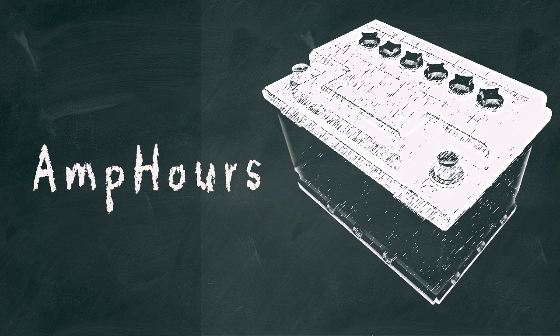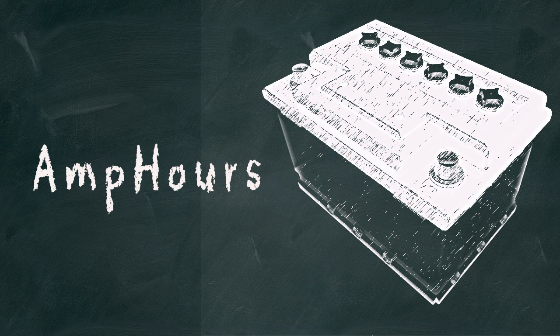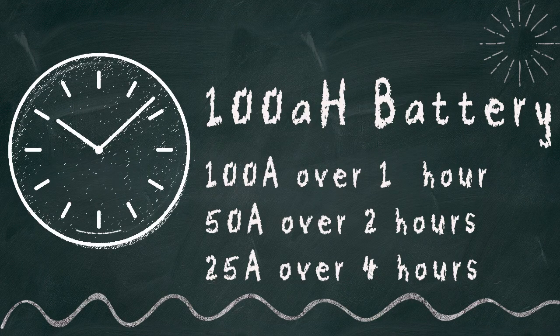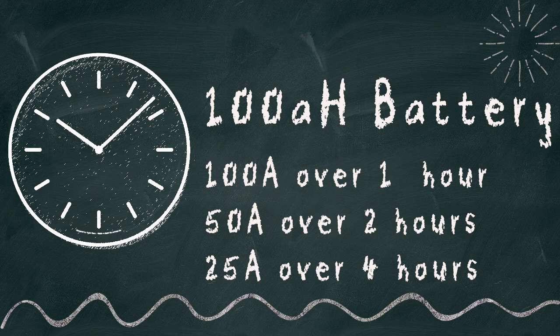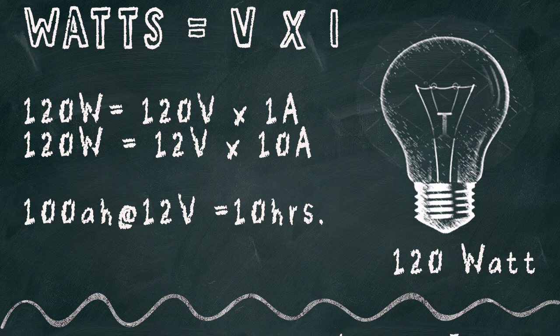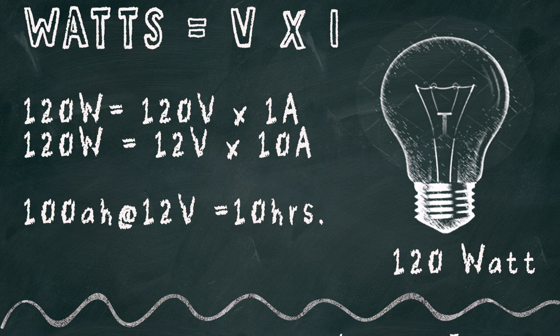If you plan to add battery storage, the key specification to understand is your battery's amp hour capacity. A 100 amp hour battery will generate a continuous 100 amps over an hour, 50 amps for 2 hours and 25 amps for 4 hours. To operate a 120 watt light bulb when it is plugged into a 120 volt wall socket requires 1 amp per hour, but operated from a 12 volt battery requires 10 amps per hour. Consequently, a 100 amp hour battery can power the light bulb for 10 continuous hours.